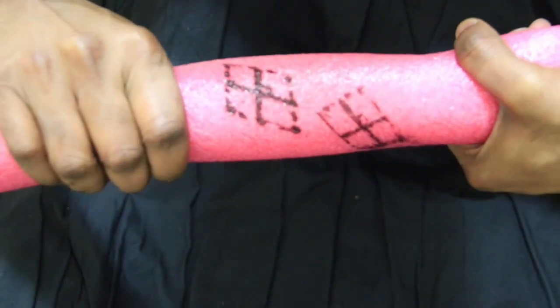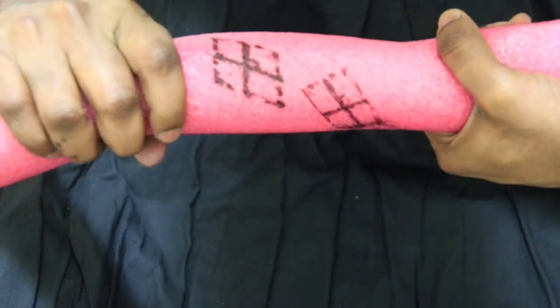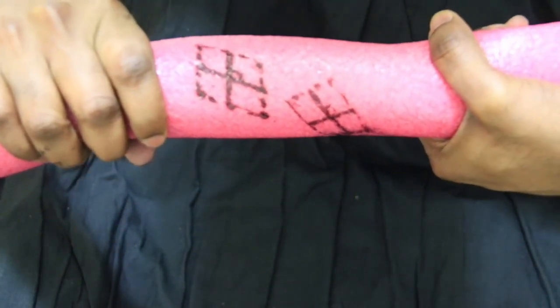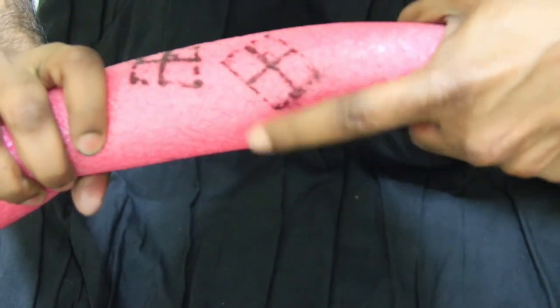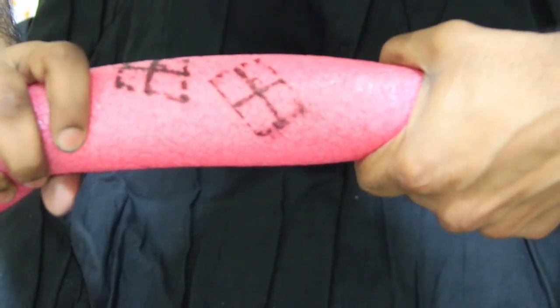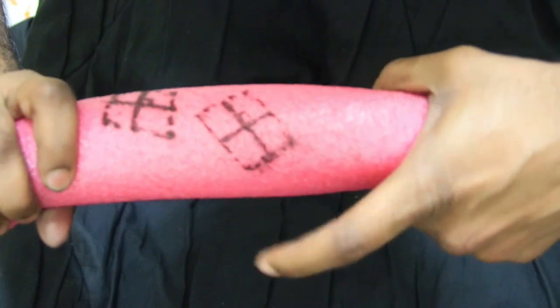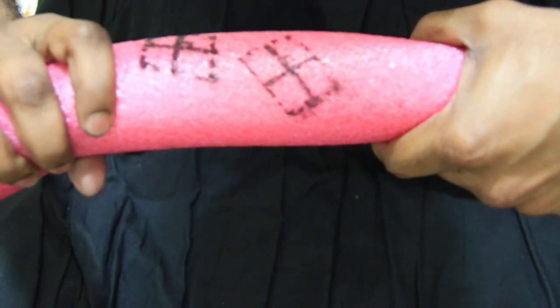The first square here has become a rhombus. The two lines here are no more perpendicular. And the second square here has become a rectangle and the two lines inside are still perpendicular. Let's analyze this further.